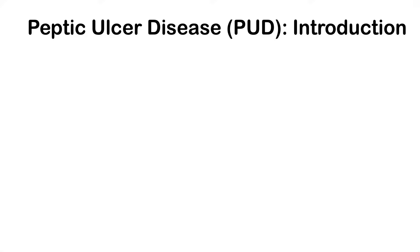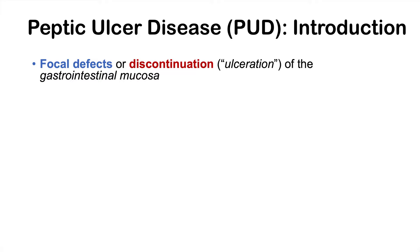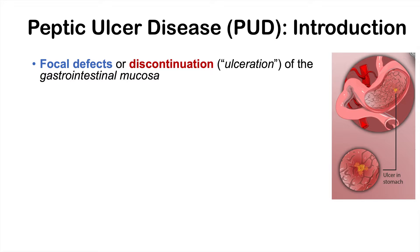Peptic ulcer disease is a disease of focal defects or discontinuation — which really means ulceration — of the gastrointestinal mucosa, which is the lining of the esophagus, the stomach, and the duodenum, or the first part of the small intestine.